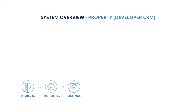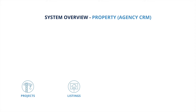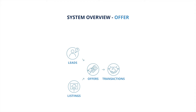A listing is an instance of a property for sale or for rent. For the agency CRM on the property side, projects and listings are added. Offers can then be created from one lead and one listing, which in turn leads to the creation of a transaction or may be cancelled. It is important to keep records of all offers made, even those that do not conclude into a transaction, as this is valuable feedback for brokers and property owners.